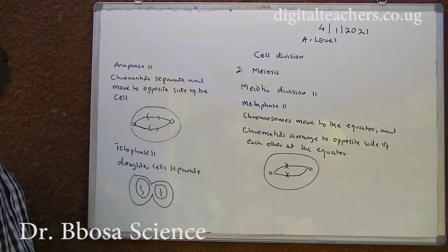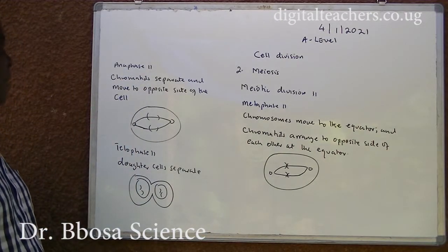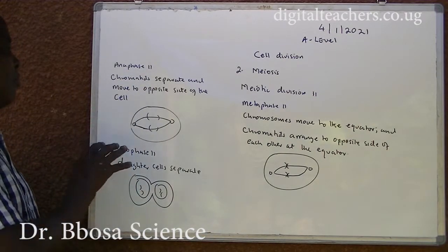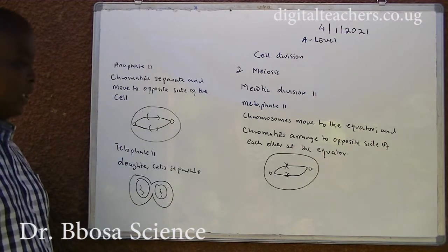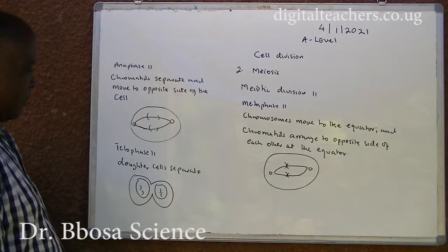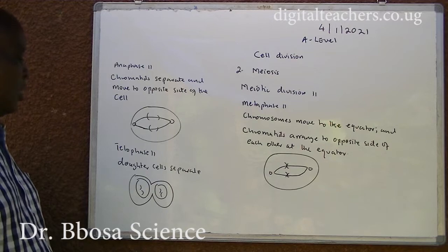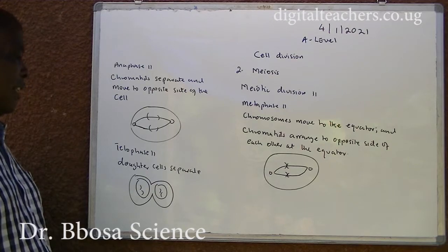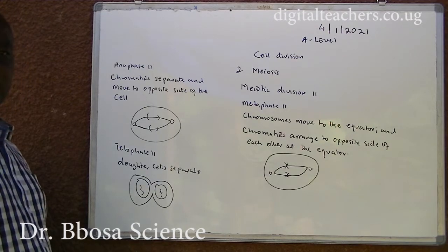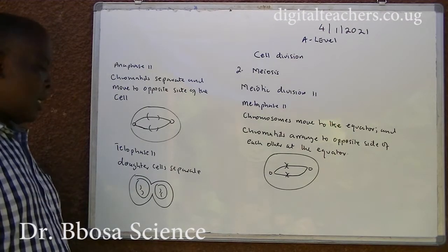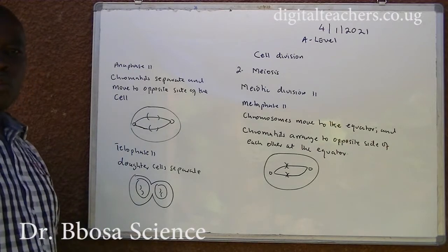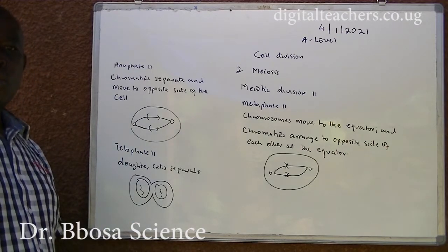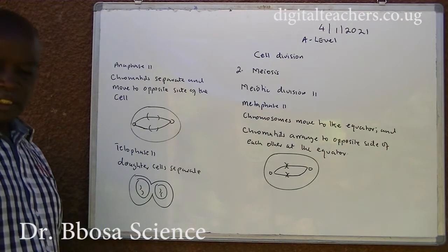Anaphase II: chromatids separate and move to opposite sides of the cell. Telophase II: the daughter cells separate, and each cell divides into two daughter cells.